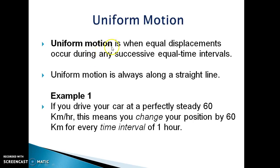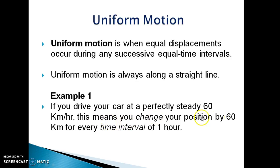Uniform motion is when equal displacement occurs during any successive equal interval of time. Uniform motion is always along a straight line. For example, if you drive your car at a perfectly steady speed of 60 km per hour, this means you change your position by 60 km for every time interval of 1 hour.